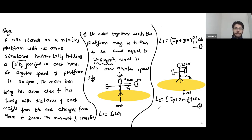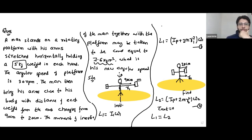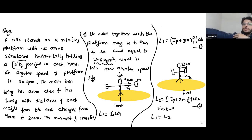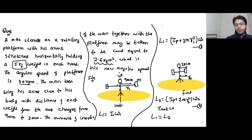Since there is no external torque acting on the system, in the absence of any external torque, its angular momentum will remain constant. This means L1 will be equal to L2. On this platform, this man is holding two weights in both hands. The separation of each weight from the man is 90 centimeters — basically the length of his arm. Initially, the whole platform along with the man is rotating with angular velocity 30 RPM.